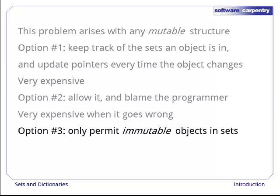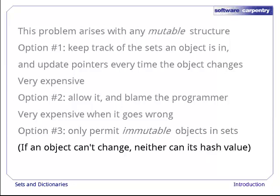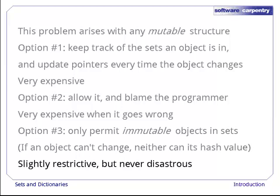Python uses a third option. It only allows programmers to put immutable values in sets. After all, if something's value can't change, neither can its hash code or its location in a hash table. In practice, this turns out to be a fairly minor restriction, occasionally annoying, but never a showstopper.